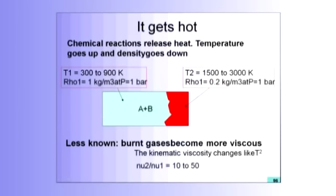Combustion gets hot — I've said that before. Just to give you orders of magnitude: in most flames, you have a temperature of the fresh gases from 300 to 900 K. Why does it go up? Because usually we don't burn gas right away; we get it through a compressor first. So at the end of the compressor, because of isentropic compression, you are hot already.